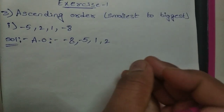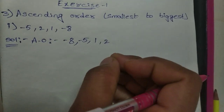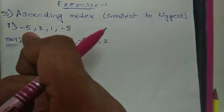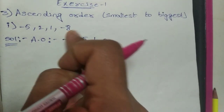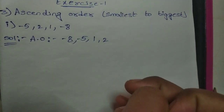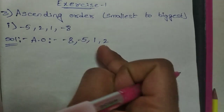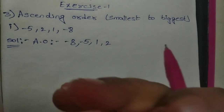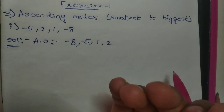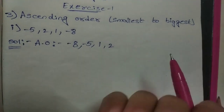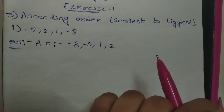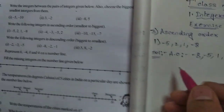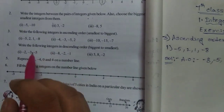If you have any confusion, draw a number line and represent the integers — positive and negative — and circle the given integers on the number line, then write them in ascending order. If you have any doubt, try that method.